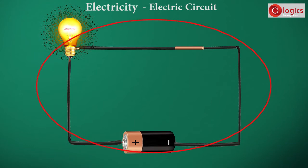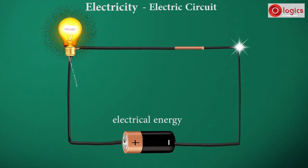This is called an electrical circuit. When current flows from negative to positive, the electrical energy is converted into heat energy, which makes the bulb glow.